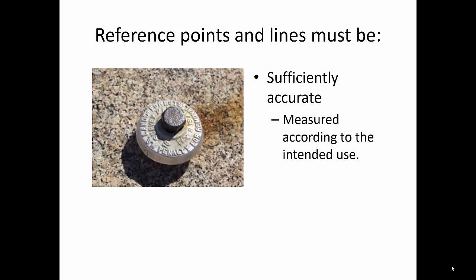sufficiently accurate for the intended use. A survey point that we use to control rough grading, if it has an accuracy of a tenth of a foot vertically, that may be adequate. However, if we are establishing a new benchmark that is going to be used by many people for many projects over several years, we're going to work to ensure accuracy at least to the nearest hundredth of a foot vertically.